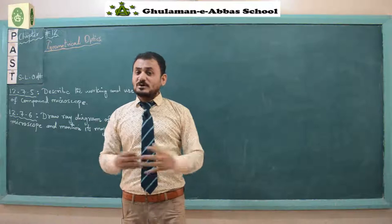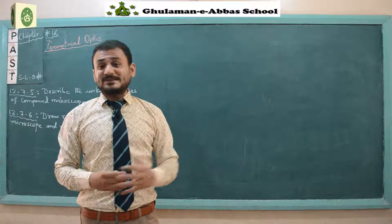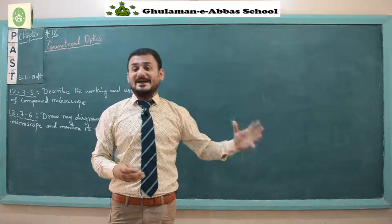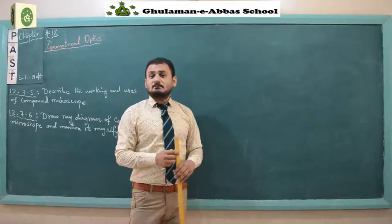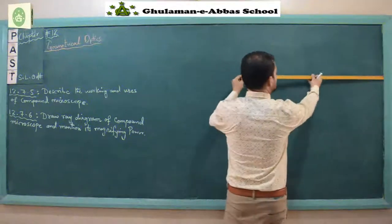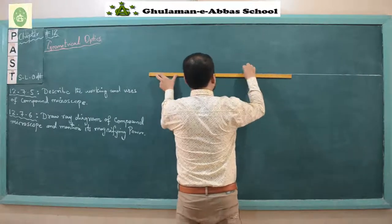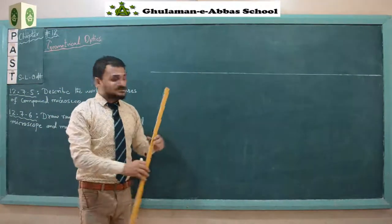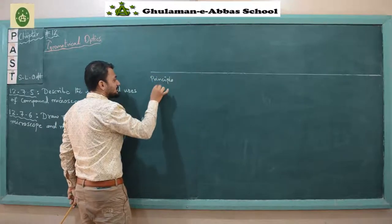Now let's move towards the ray diagram to understand how the compound microscope forms an image and how it works. First of all, we draw the principal axis. So here we have drawn our principal axis.